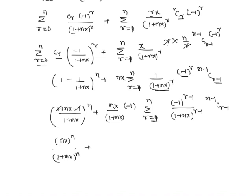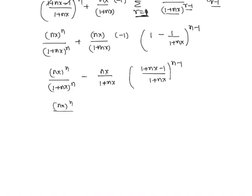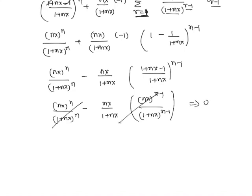The expression becomes (nx/(1+nx))^n times nx, plus nx times (-1) times sigma from r=1 to n of (-1)^(r-1) divided by (1+nx)^(r-1) times (n-1)C(r-1), which equals (1 - 1/(1+nx))^(n-1). This simplifies to nx/(1+nx)^n minus nx divided by (1+nx) times (nx/(1+nx))^(n-1) divided by (1+nx)^(n-1). Multiplying through, the two terms are equal and opposite, giving 0. This is the required answer.